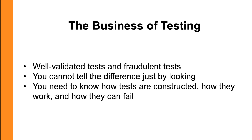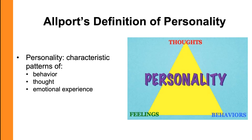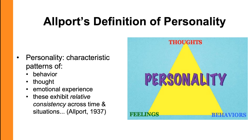The first thing to refresh our memory on is what personality is. You'll remember that our definition of personality is based on Allport's definition, and that's that personality is a person's characteristic patterns of their thoughts or their beliefs, their behaviors or their actions, and their emotional experiences or their feelings. These three things — thoughts, feelings, and behaviors — are thought to be relatively consistent throughout a person's lifespan, and therefore we should be able to measure them reliably.